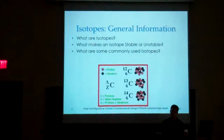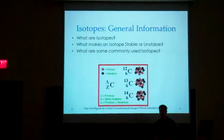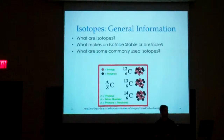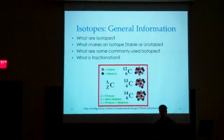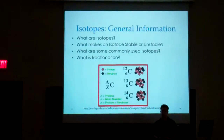Some commonly used isotopes are found in biology and various sciences such as geology. We commonly use carbon, nitrogen, sulfur, oxygen, and hydrogen — things we find in organisms or in rock samples. Fractionation is what we use to measure isotopes. This is the process that makes isotopes so valuable. Fractionation is the separation of these isotopes through various processes — some physical, some chemical.